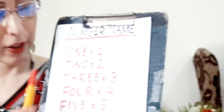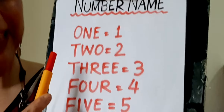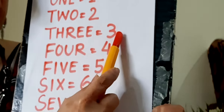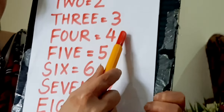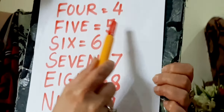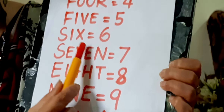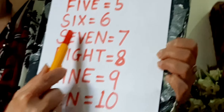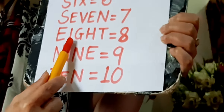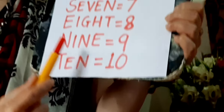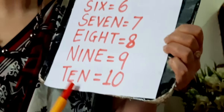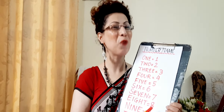Let's learn them using my pen and number chart. Ready? O-N-E, 1. T-W-O, 2. T-H-R-E-E, 3. F-O-U-R, 4. F-I-V-E, 5. S-I-X, 6. S-E-V-E-N, 7. E-I-G-H-T, 8. N-I-N-E, 9. T-E-N, 10. This is the spelling of numbers from 1 to 10.